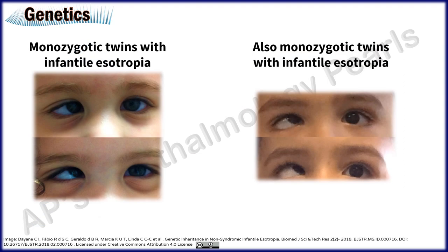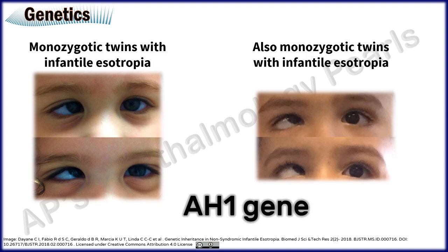Infantile esotropia can run in families and appears to be a manifestation of multifactorial gene involvement. Monofixation syndrome has been noted to be much more common in first degree relatives of patients with infantile esotropia, and Diane et al found a possible involvement of the AH1 gene in the pathology of infantile esotropia.